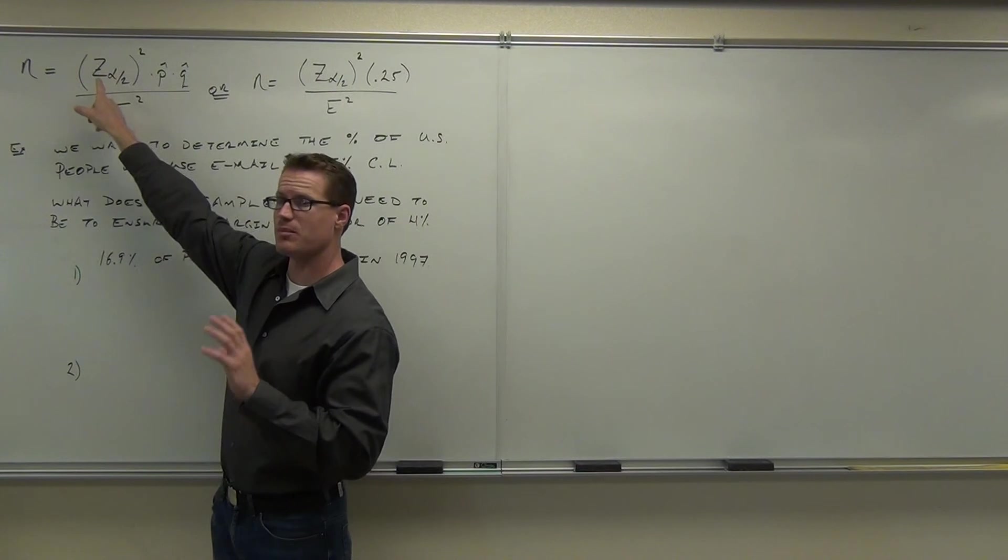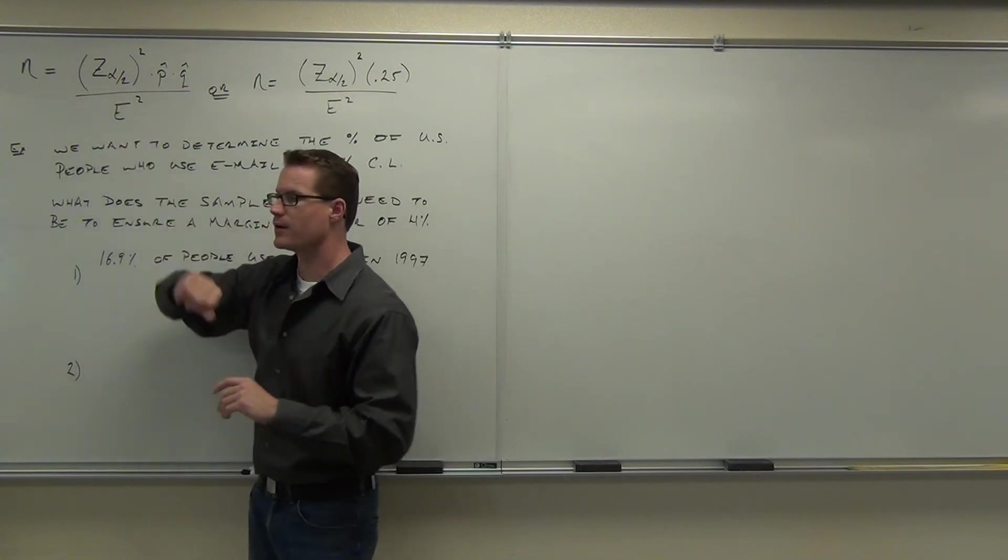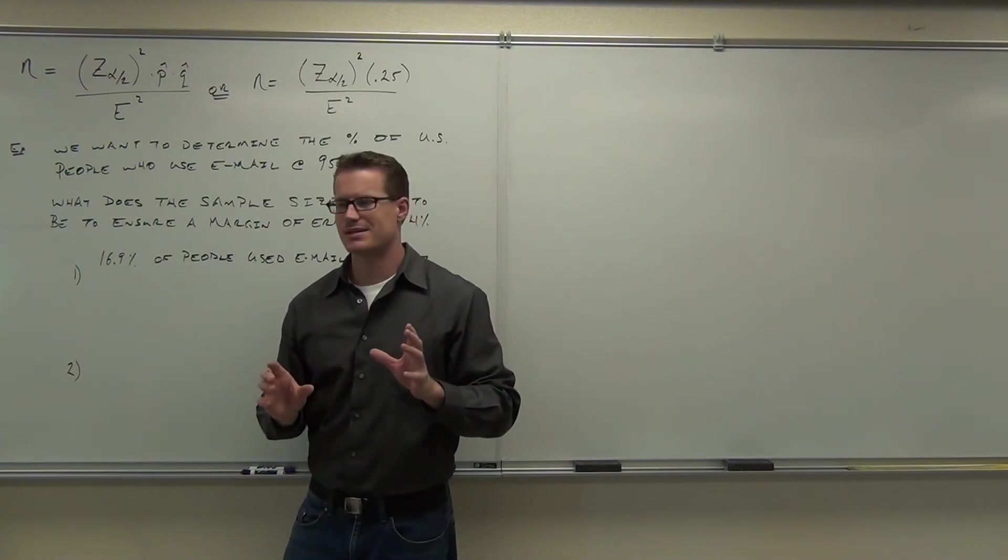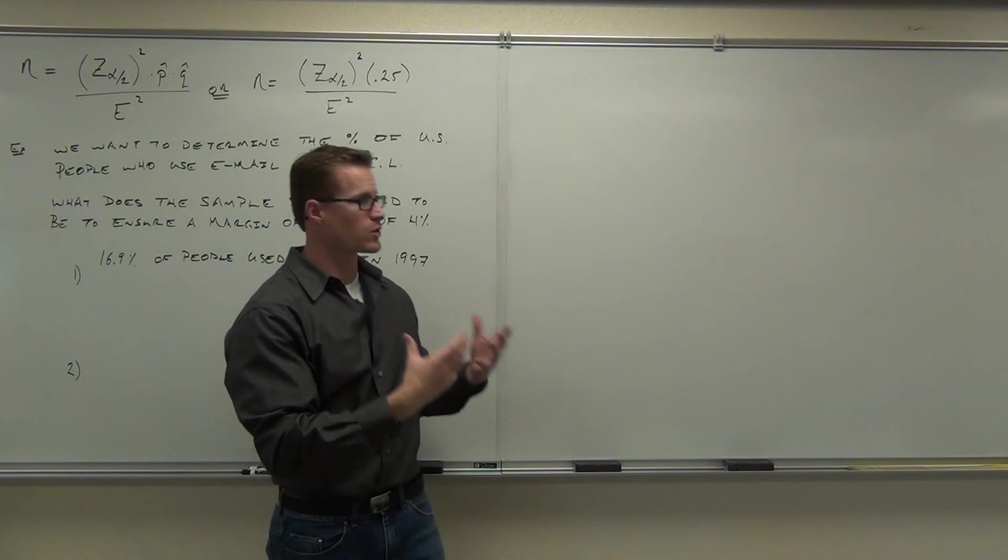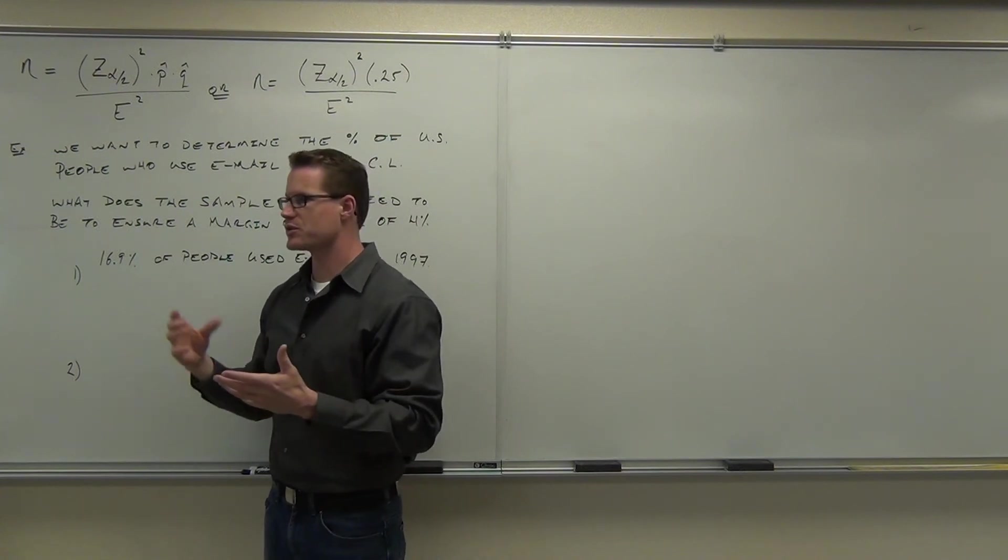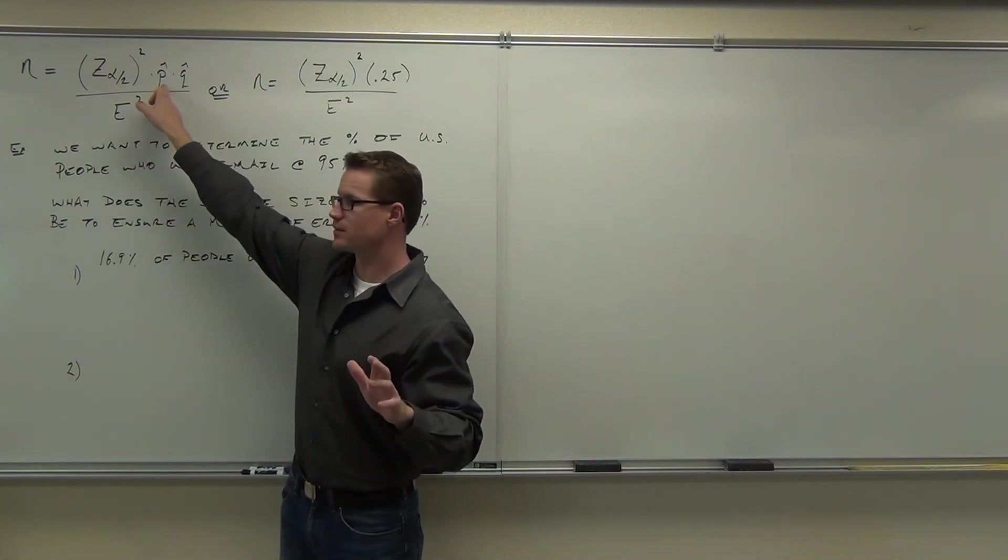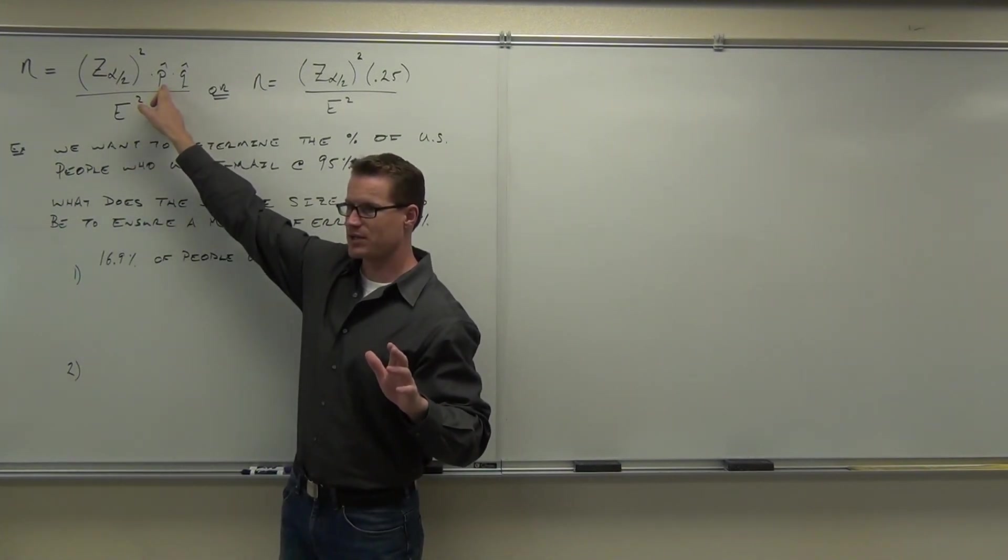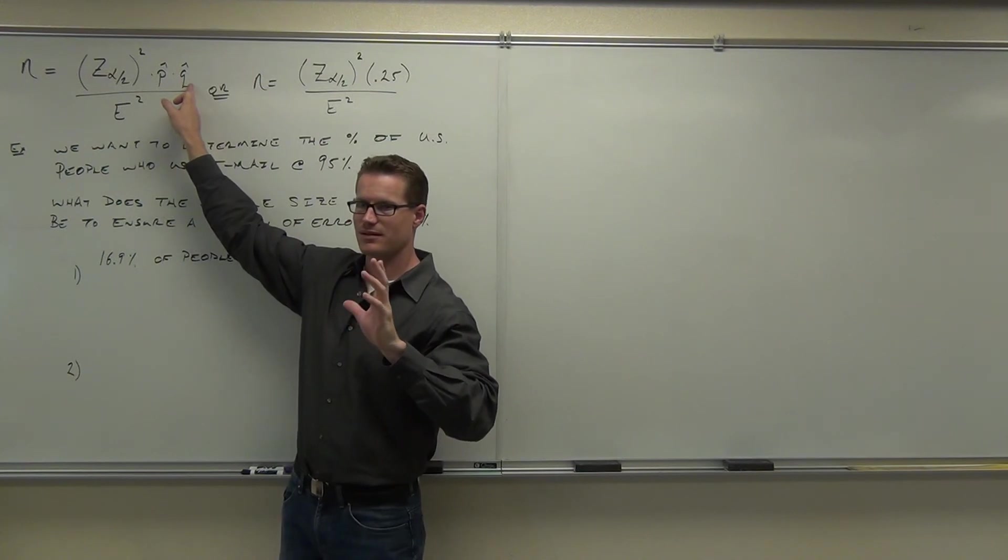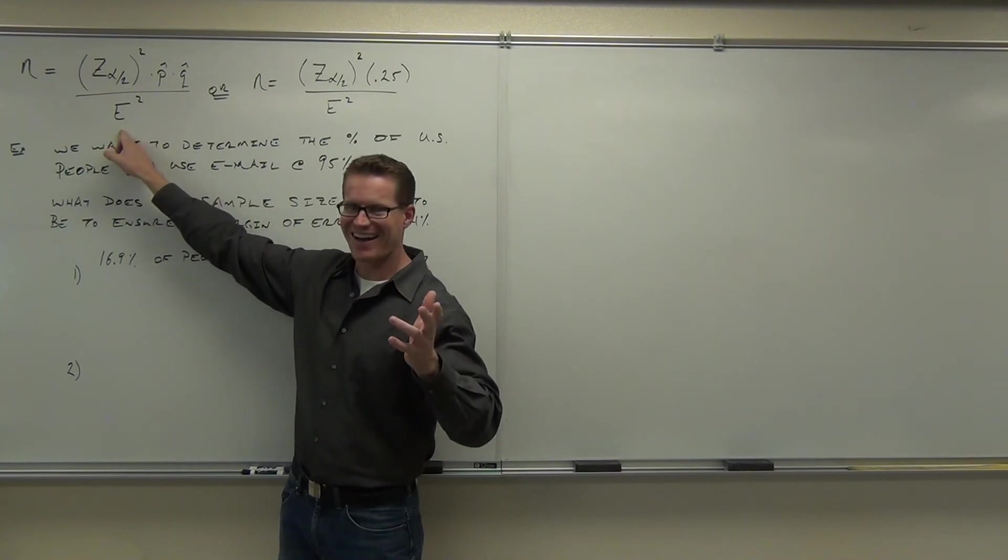Can you tell me what the Z alpha over 2 actually is? It's a critical value given by the confidence level. What's P hat? Sample proportion of successes. And Q hat? Sample proportion of failures. Margin of error is E. This is what we normally find. Now we're going another way and finding sample size. We're asking what sample size is needed in order to create this margin of error.